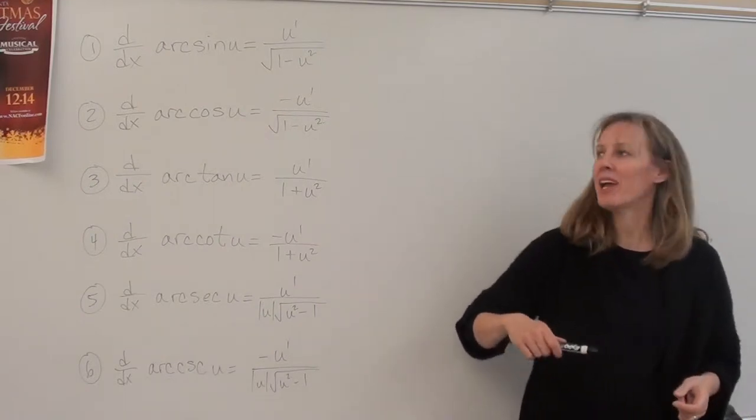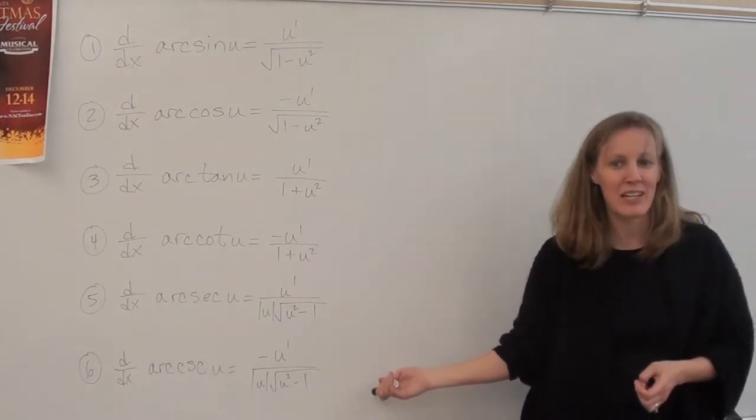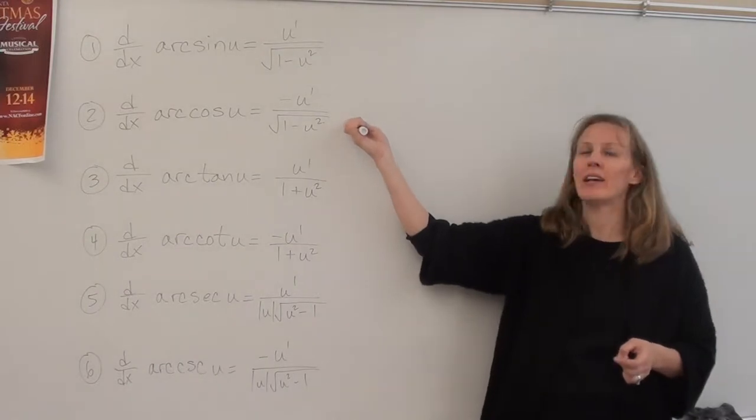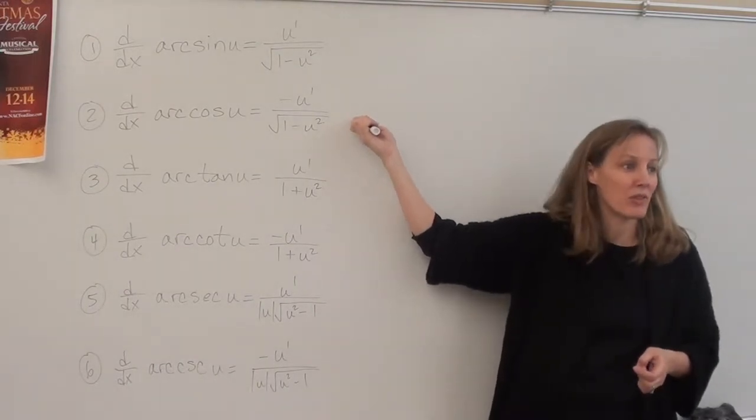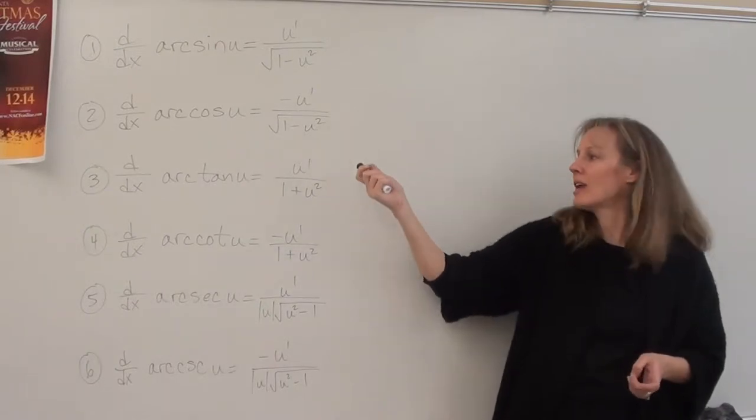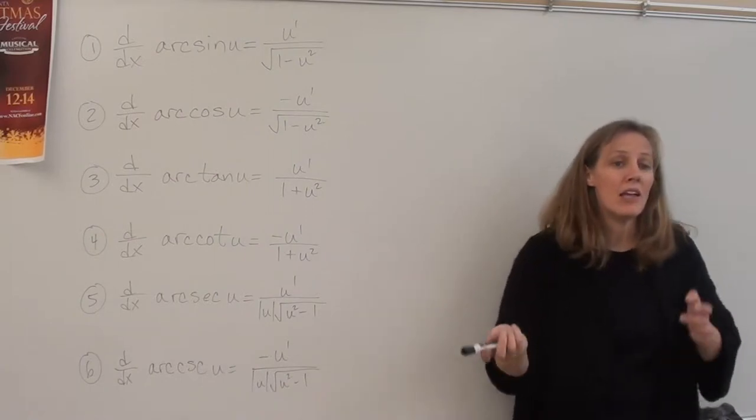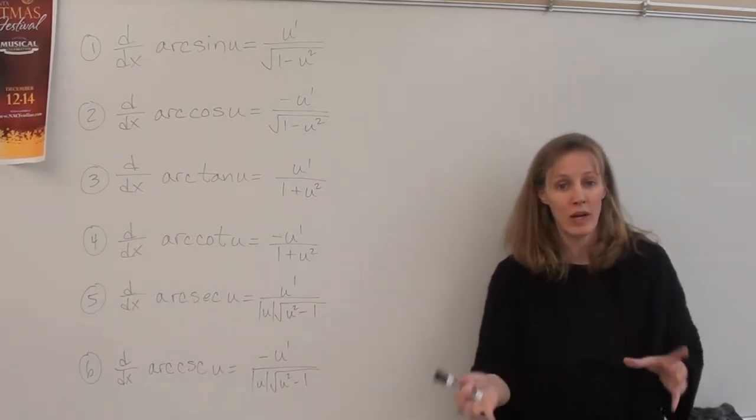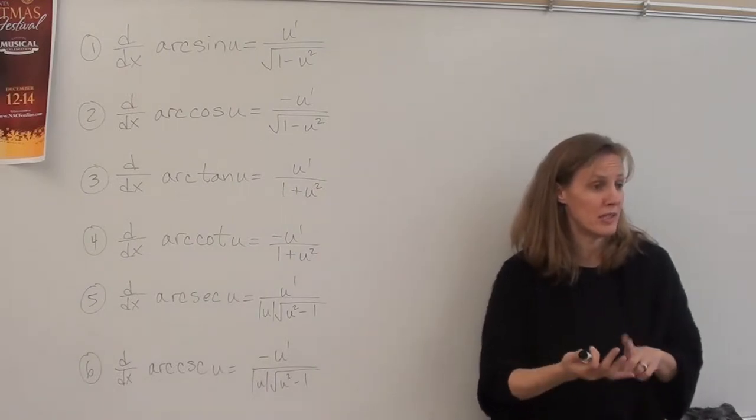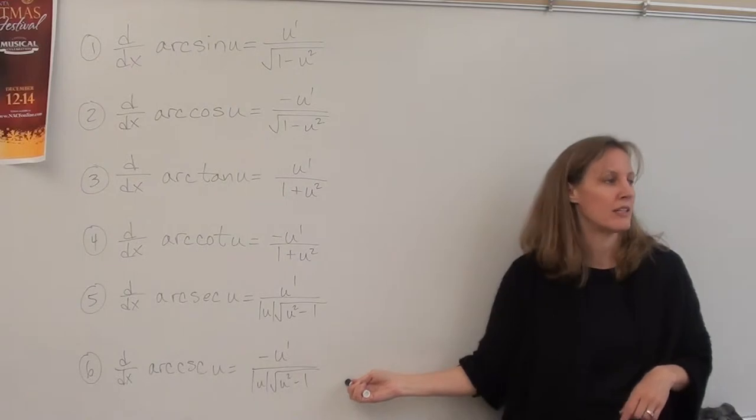On the board, we have derivatives of the six inverse trig functions, right? The one thing I want you to notice is that sine and cosine are exactly the same. The only difference is that the derivative of arc cosine is negative. Same for tangent and cotangent, same for secant and cosecant. And again, if you remember, just like the regular trig derivatives, all the co-functions, the derivatives are all negative. Cosine, cotangent, cosecant, negative, negative, negative.